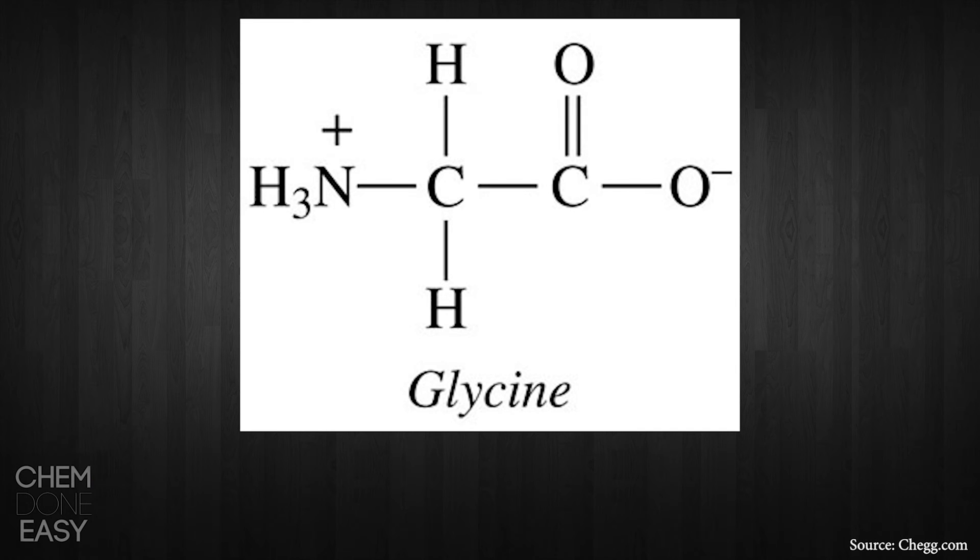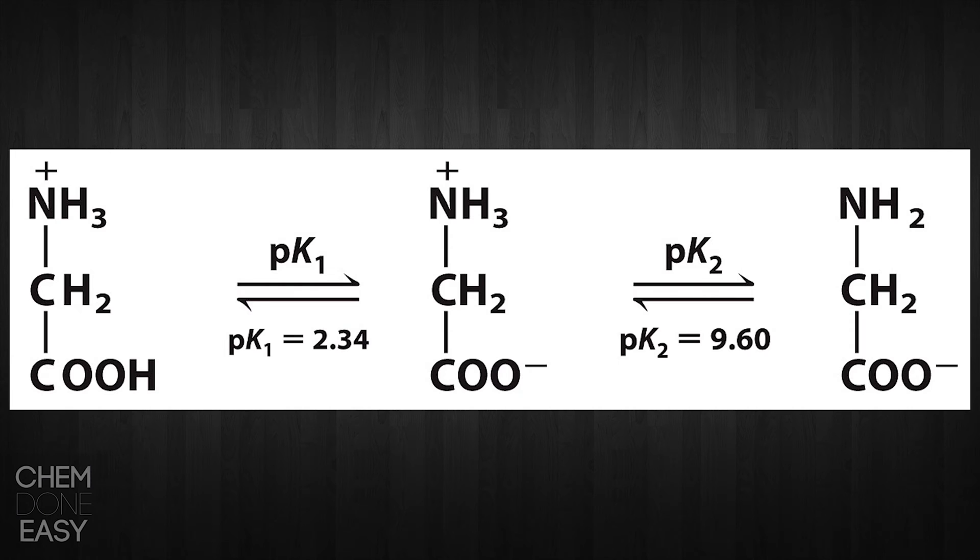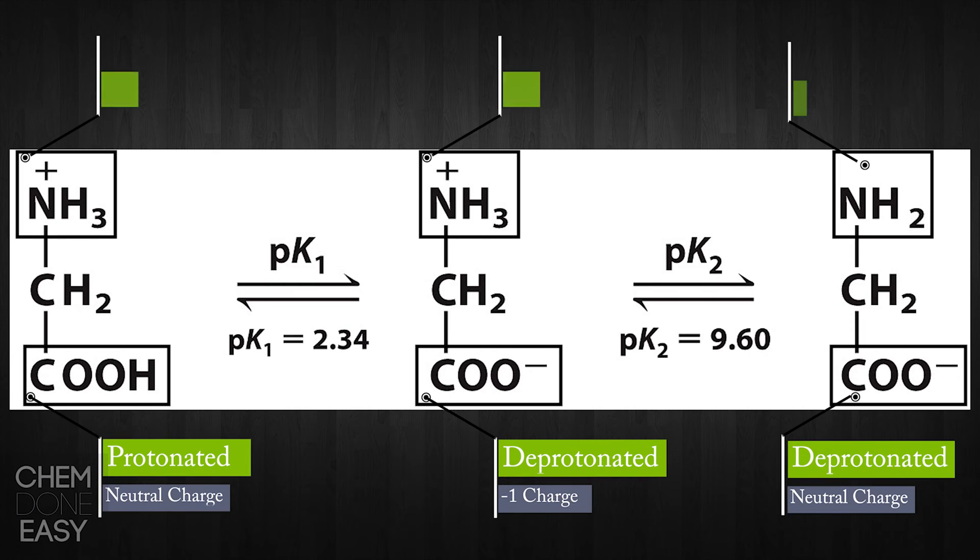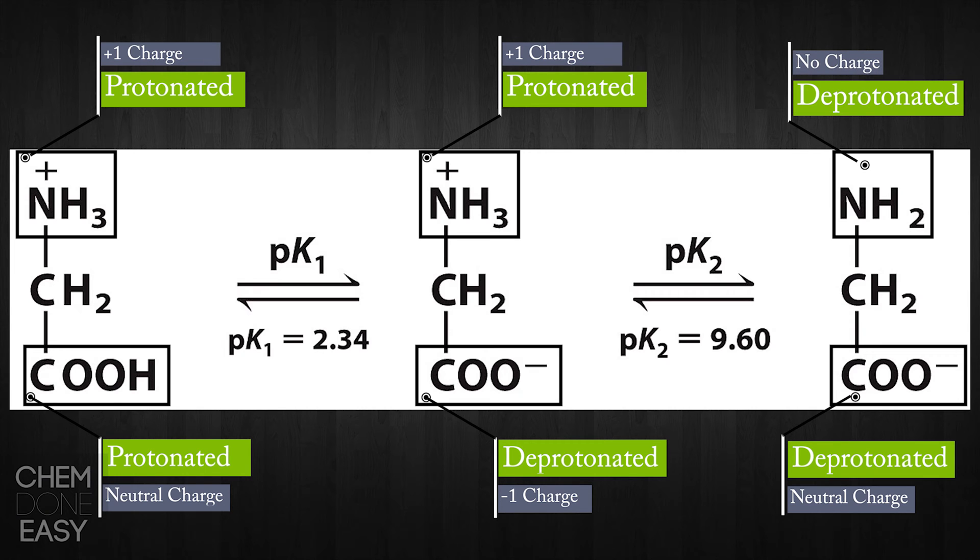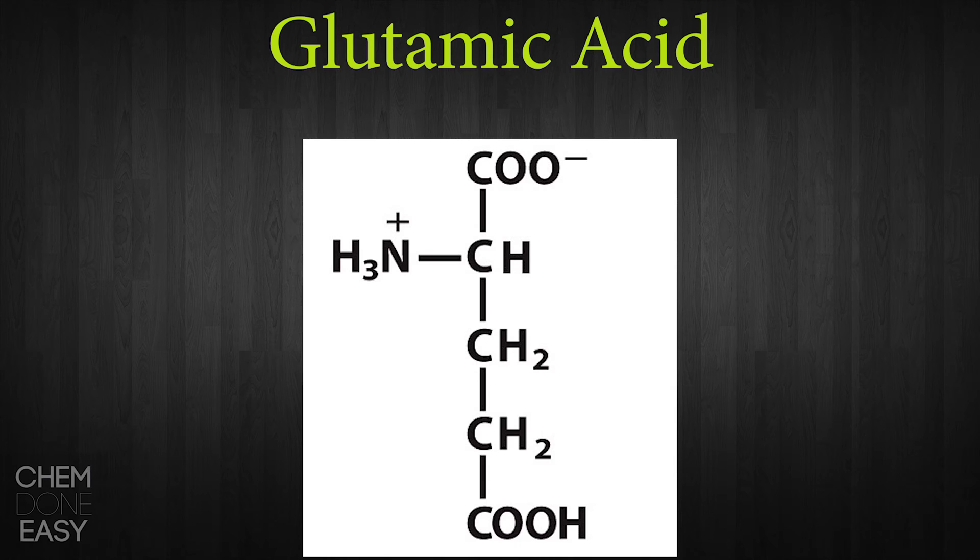It is important to point out that with glycine it has a neutral R group. So when determining the isoelectric point, we only looked at the carboxyl and the amine group. But what happens if we have an amino acid with an acidic or a basic R group?